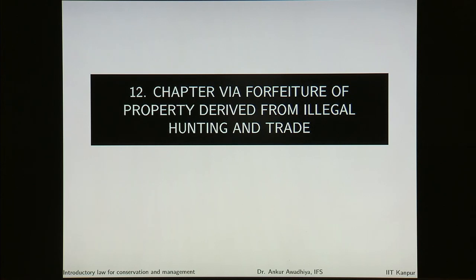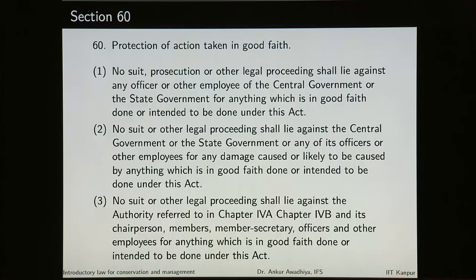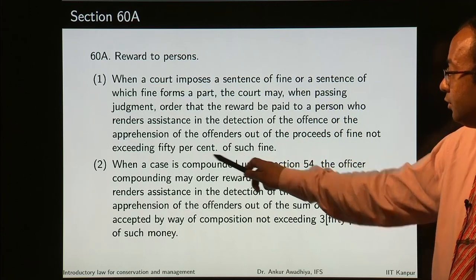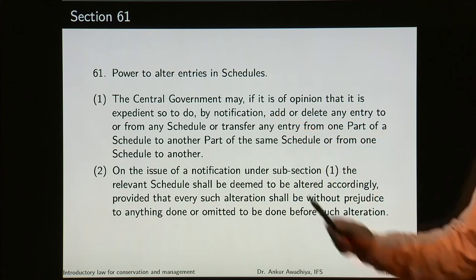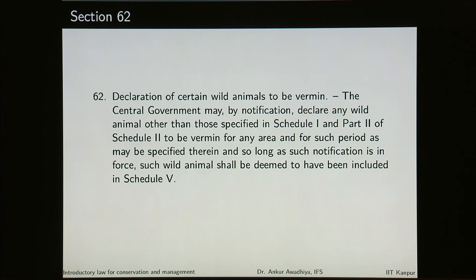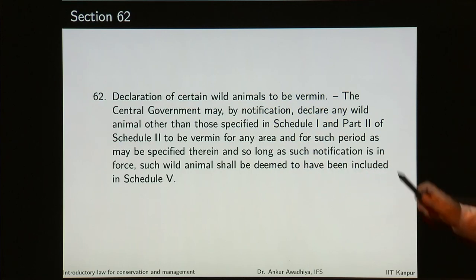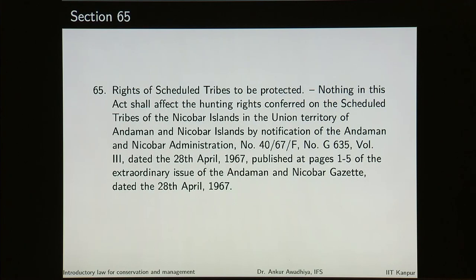Chapter 6A talks about forfeiture of property derived from illegal hunting and trade. Miscellaneous provisions include: officers are deemed to be public servants, protection of action taken in good faith, provision of reward to persons which can be given out of the proceeds of the fine and will not exceed 50% of the fine. There is power to alter entries into the schedules — only the central government can change the schedules. Declaration of animals to be vermin is also with the central government, and such animals will be declared as vermin for specified areas and for specified periods as specified in the notification. There is power of central government to make rules and power of state government to make rules, and it says that rights of scheduled tribes are to be protected. This is about the Wildlife Protection Act.